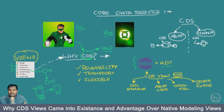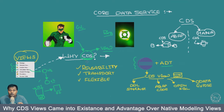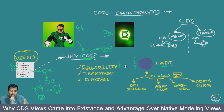A CDS view is created with the Eclipse ADT plugin and it is essentially a Data Definition Language where you define a structure. You can also query that structure, which is done with ABAP code. Once I have created a structure in my CDS, I can reuse it — for example, I can copy a piece of code and add my own implementation there.